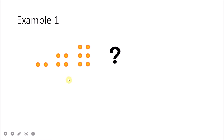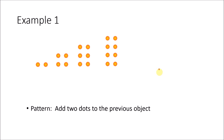In example 1, the first diagram has 2 dots, the second has 4 dots, and the third has 6 dots. The fourth diagram has 8 dots. The pattern is adding 2 dots to the previous object: 2+2=4, 4+2=6, 6+2=8.